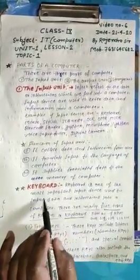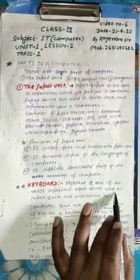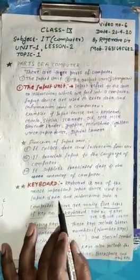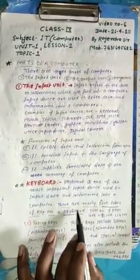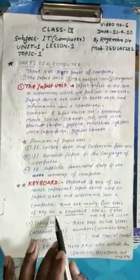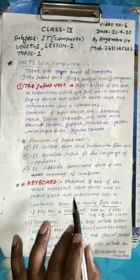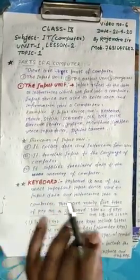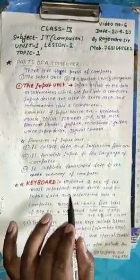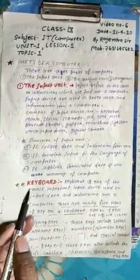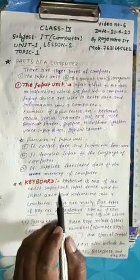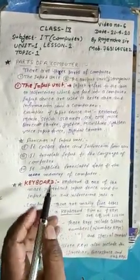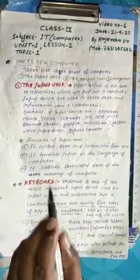Keyboard is one of the most important input devices used to input data and instructions into a computer. There are mainly five types of keys on a keyboard. Without keyboards, it is not possible to type letters, applications, notices, and different types of work with the help of keyboards.